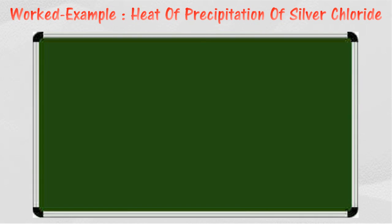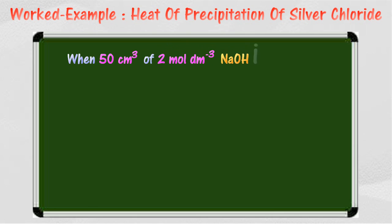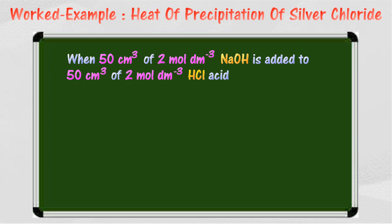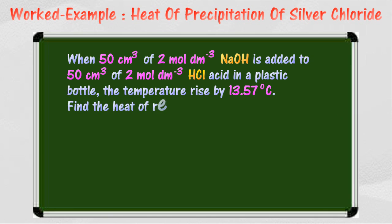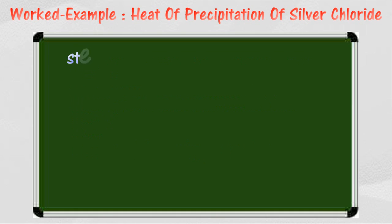Here are the steps in calculating the heat of neutralization. When 50 cm³ of 2 mol/L sodium hydroxide is added to 50 cm³ of 2 mol/L hydrochloric acid in a plastic bottle, the temperature rises by 13.57 degrees Celsius. Find the heat of reaction in kilojoules per mole.